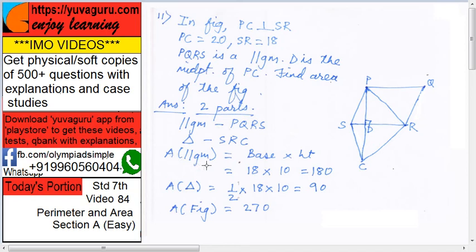So, area of parallelogram is base into height. What is the base given? SR is given as 18 and this full PC is 20. So D is the midpoint, so this is 10. So 18 into 10 equals 180.